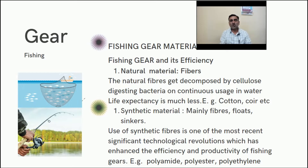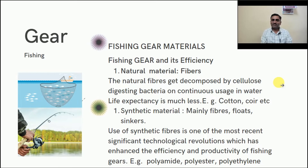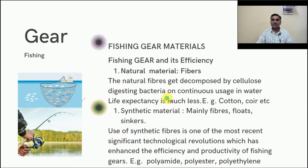The efficiency of fishing gear depends on the material and its ability to capture fish. As we know, natural material mostly requires fibers for construction. Those fibers are of two types: natural fiber and synthetic fiber. Natural fiber is decomposed by cellulose-digesting bacteria and continuous exposure to water. That is why the life expectancy of natural fiber in water is much less.